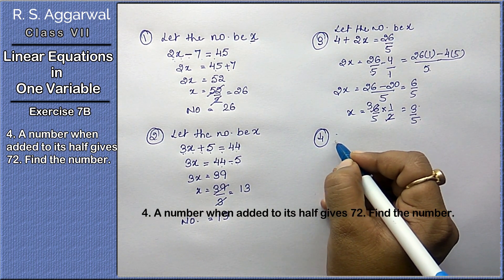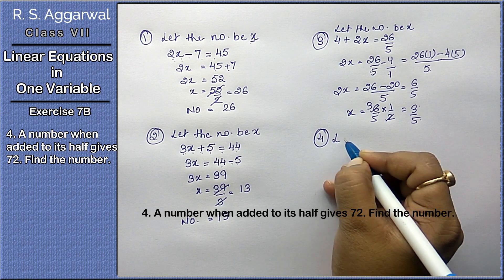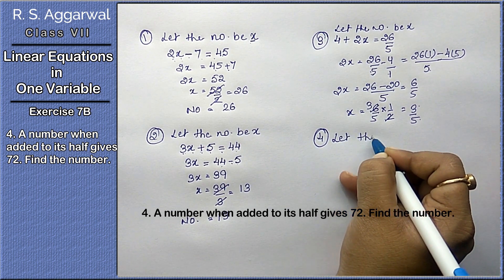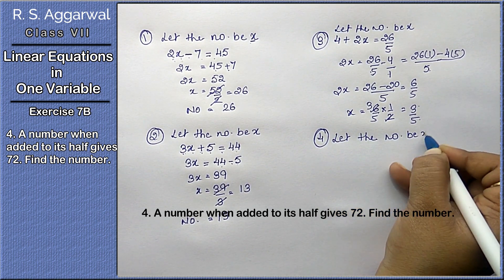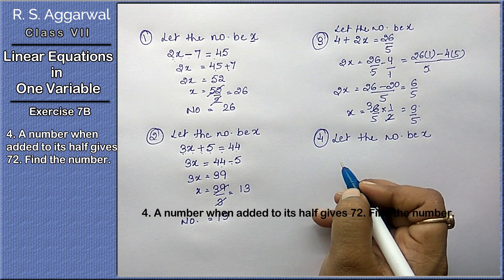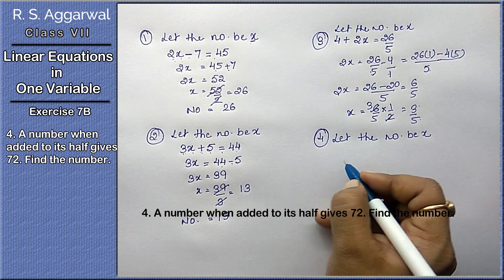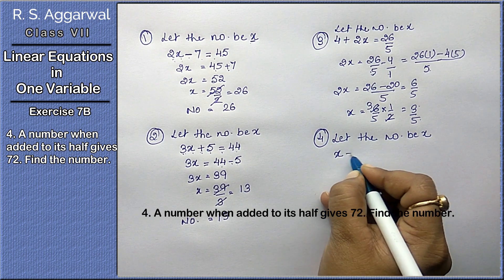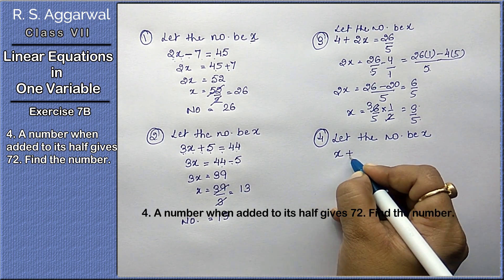We have to find the number, so let the number be x. A number added to its half. Its half is x divided by 2.